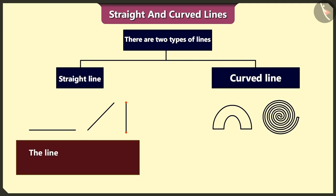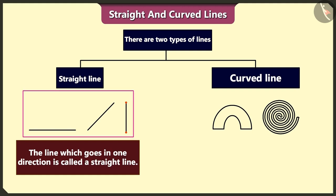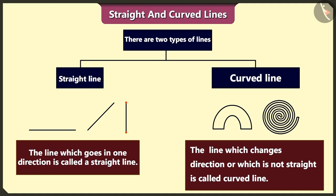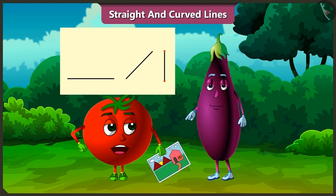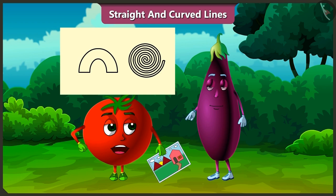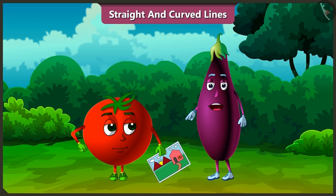The line which goes in one direction is called a straight line, and the line which changes direction or which is not straight is called curved line. Okay, so we have to draw this picture using straight and curved lines. Yes, so let's draw.